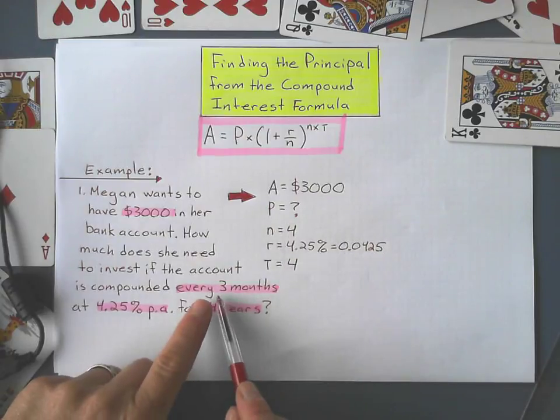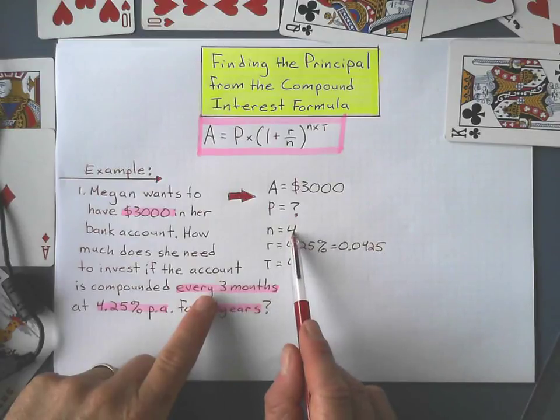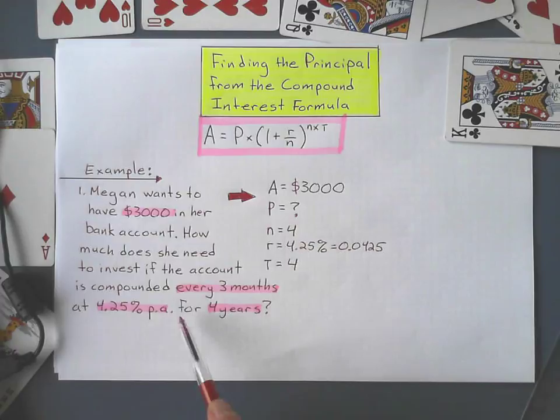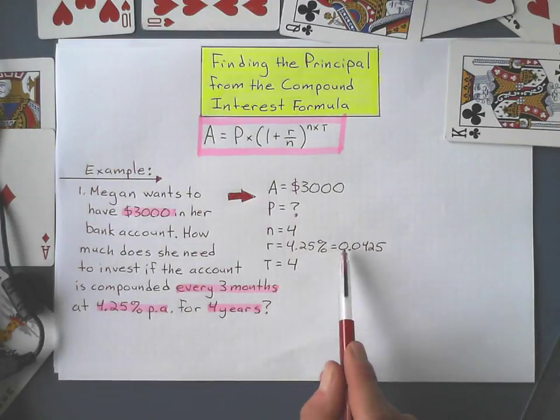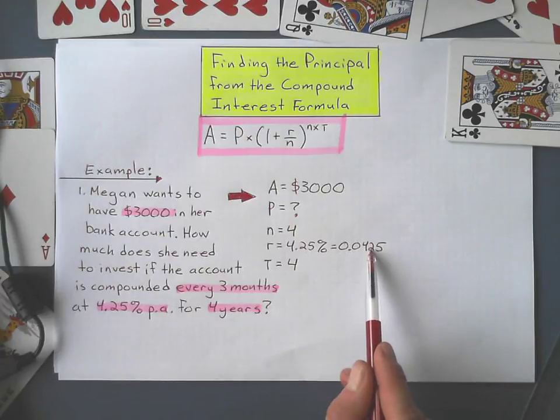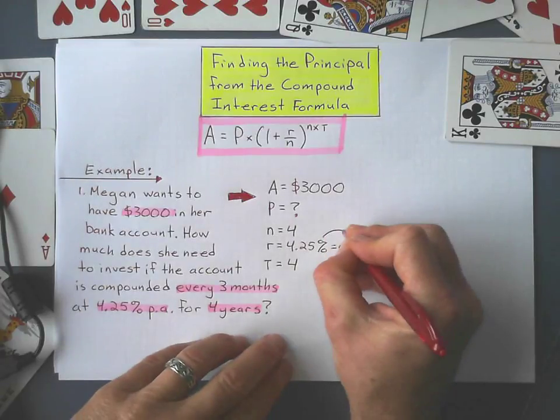And here's the part that we don't want to make mistakes on. If it's compounded every 3 months, that means it's compounded 4 times a year. My interest rate is 4.25%, and when we put that into the formula, we want to make that a decimal. And to do that, we just divide by 100.